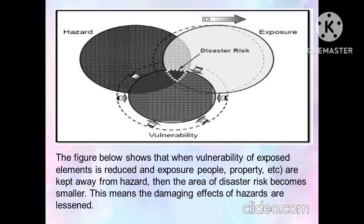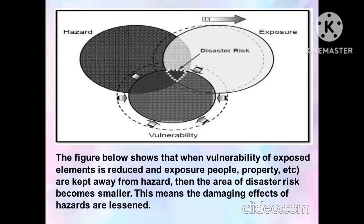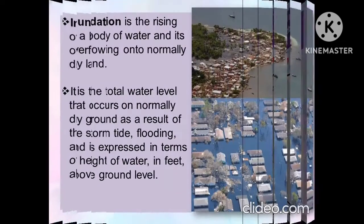When the vulnerability of exposed elements is reduced and people, property, and other elements are kept away from hazards, then the area of disaster risk becomes smaller. This means the damaging effects of the hazard are lessened. The following are some prevention and mitigation measures spearheaded by the national and city government disaster risk reduction and management committees. The first is the risk assessment profile with the use of hazard maps.